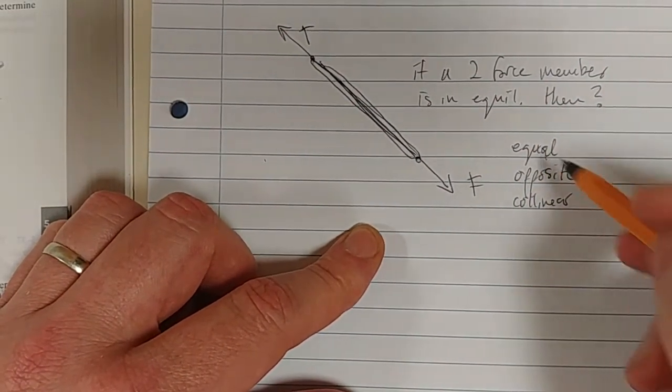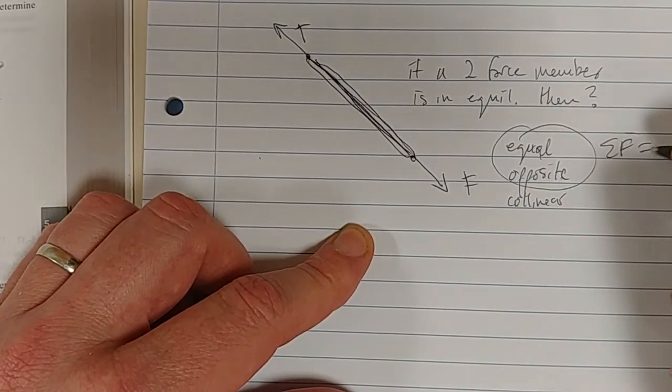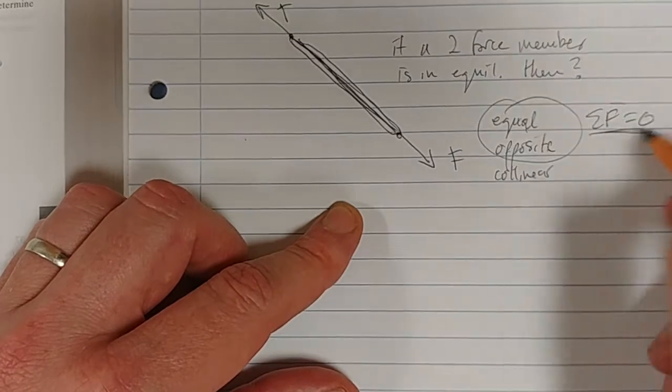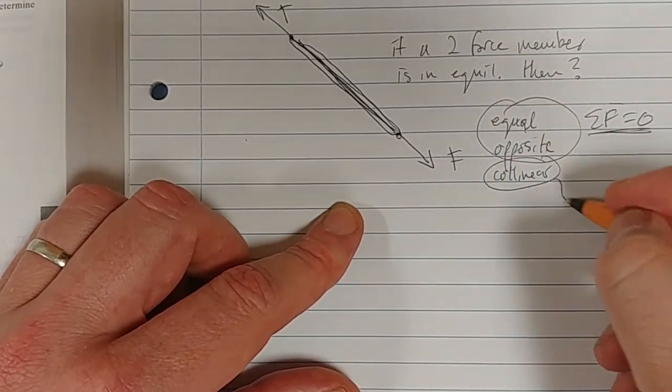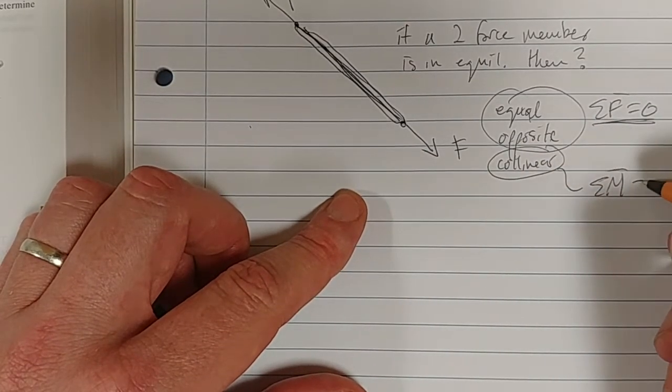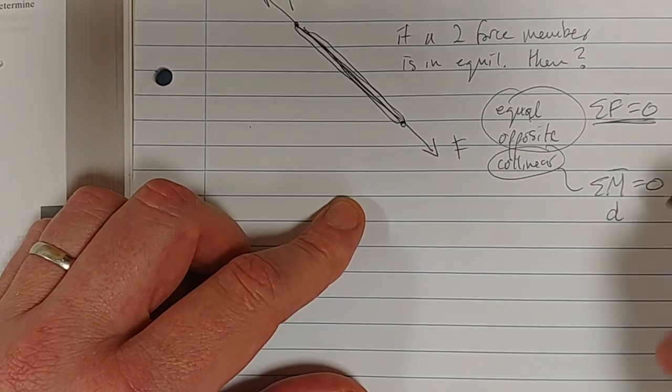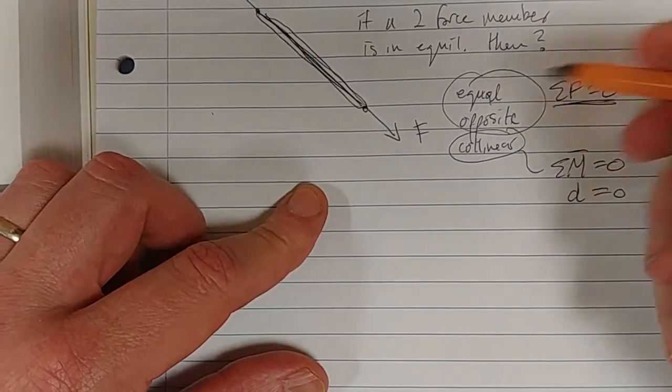The equal and the opposite tell us that the sum of the forces is zero, which means we've got equilibrium. And the collinear part tells us that the sum of the moments is zero, right? Because the moment arm D equals zero.